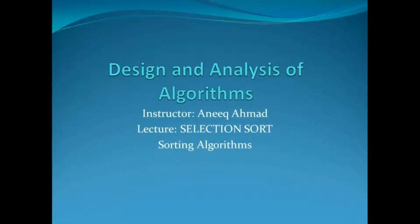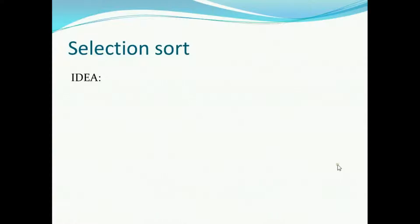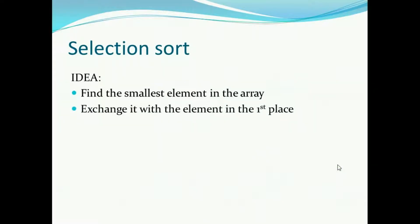Hello guys, we are checking the selection sort — what is the basic idea and a dry run to understand the crux of this algorithm. So what is the basic idea behind the selection sort? The idea is to find the smallest element in the array and exchange it with the element that is present in the first place.